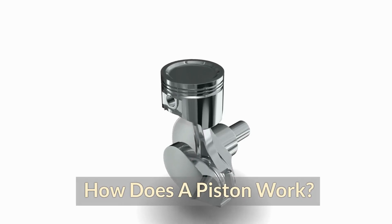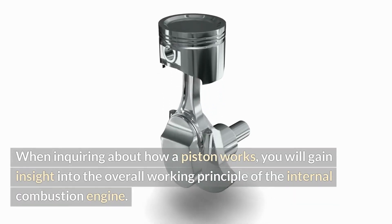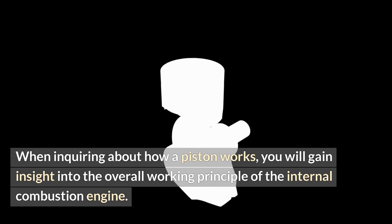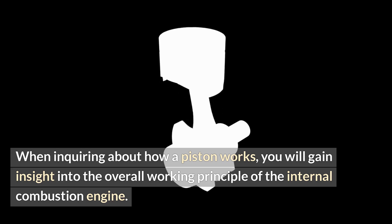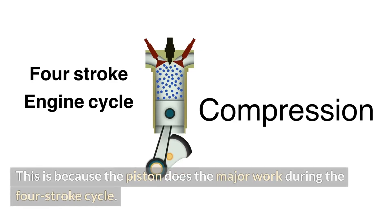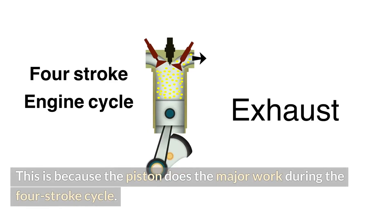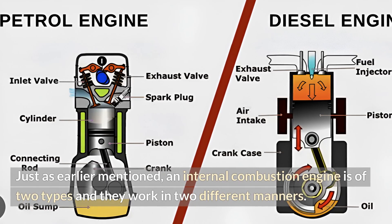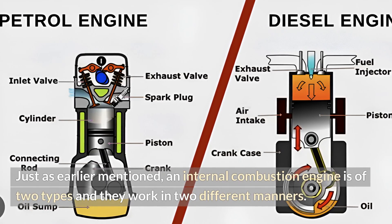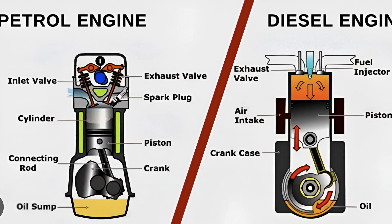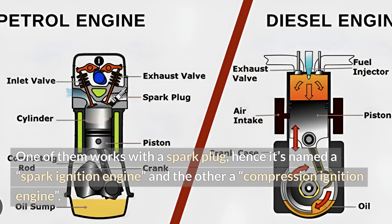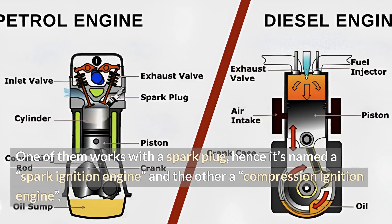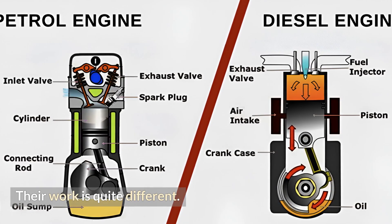How does a piston work? When enquiring about how a piston works, you will gain insight into the overall working principle of the internal combustion engine, because the piston does the major work during the four-stroke cycle. An internal combustion engine is of two types and they work in two different manners. One of them works with a spark plug, hence it's named a spark ignition engine, and the other a compression ignition engine. Their work is quite different.